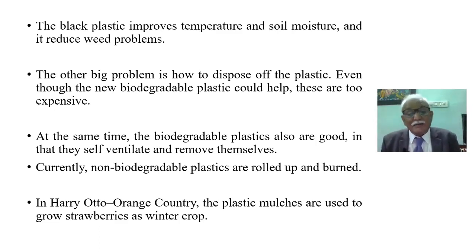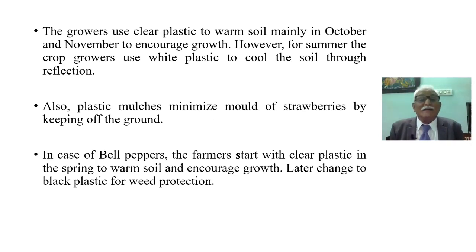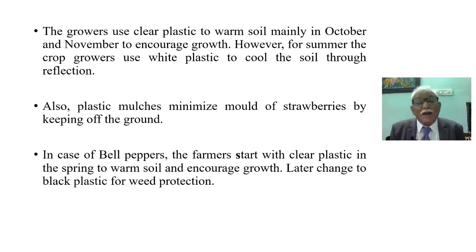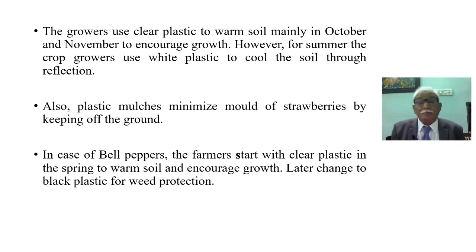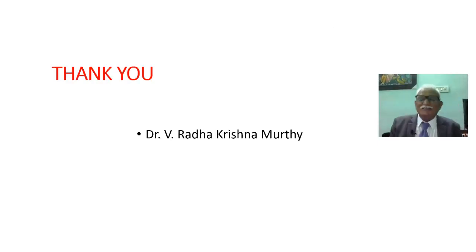In another country, plastic mulches are used to grow strawberries. In winter, growers use clear plastic to warm the soil in October and November to increase growth. For summer crops, growers use white plastic to cool the soil through reflection. Plastic mulches also minimize mold on strawberries by keeping them off the ground. For peppers, farmers start with clear plastic in spring to warm the soil, then change to black plastic for weed protection.